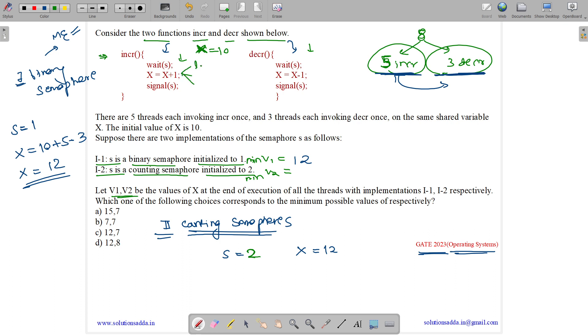Increment can be broken down into three parts: load X in register R1, increment R1, store R1 in X. And similarly for decrement: load X in R2, decrement R2, and then store R2 in X. Now let us see the operations. We have initial value as 10. So initially X is 10 and S is 2.